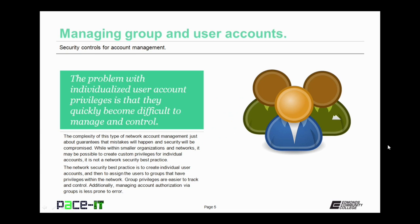The problem with individualized user account privileges is that they quickly become difficult to manage and control. The complexity of this type of network account management just about guarantees that mistakes will happen and security will be compromised. While within smaller organizations and networks it may be possible to create custom privileges for individual accounts, it is not a network security best practice. The best practice is to create individual user accounts and then assign users to groups that have privileges within the network. Group privileges are easier to track and control, and managing account authorization via groups is less prone to error.